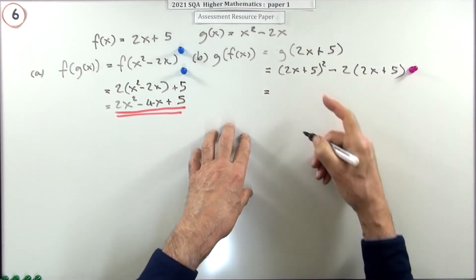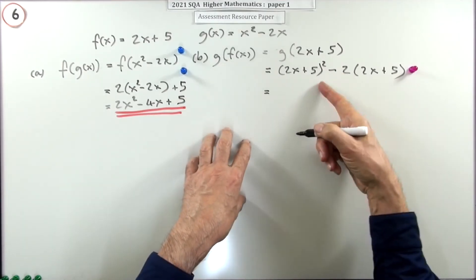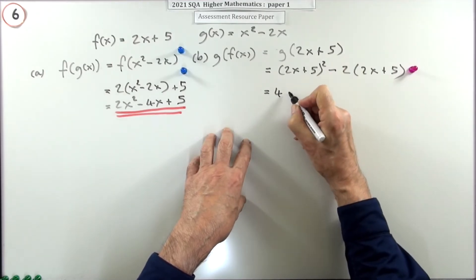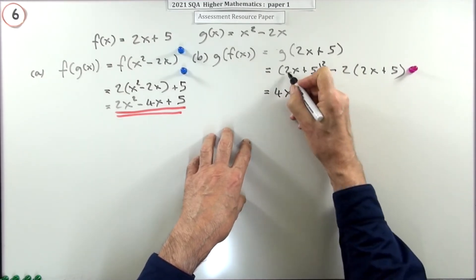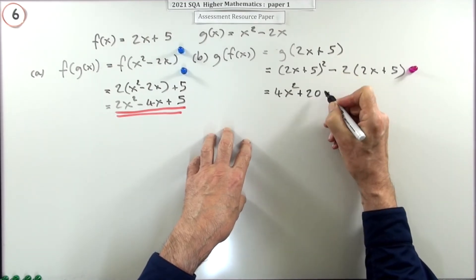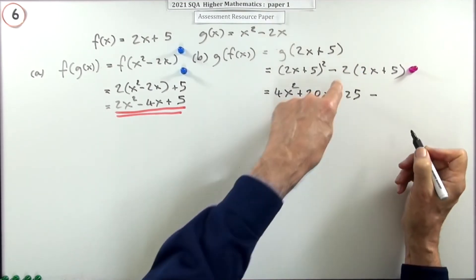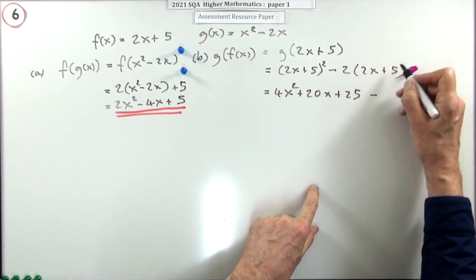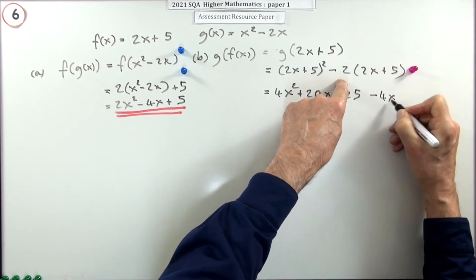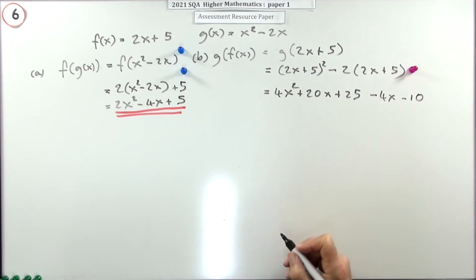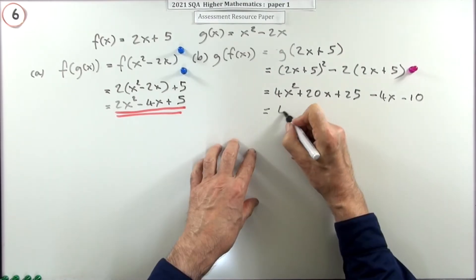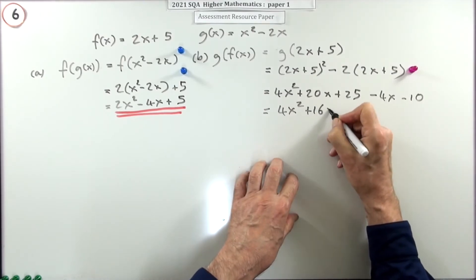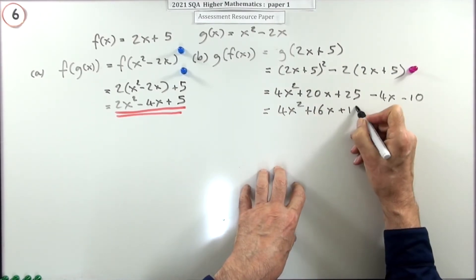You've got to square the bracket using the pattern: square the first, square the last, in the middle twice the product. So square the first, twice the product is 10x doubled to 20x, square the last is 25. Then minus 2 times the bracket — that's minus 4x and minus 10. Tidying up: one term in x squared, 20 take away 4 gives 16x, and 25 take away 10 gives plus 15.